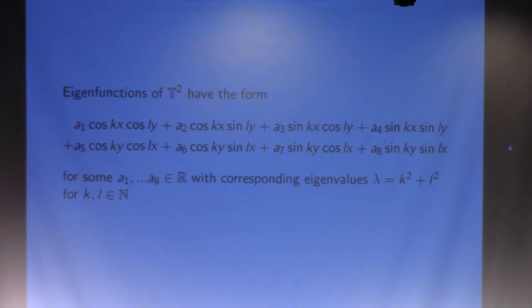Some pretty simple calculations show that any eigenvalue will have the form k squared plus l squared for k and l natural numbers. The eigenspace will have the basis cosine kx cosine ly, sine kx sine ly, and then switching x and y and pairwise products of those. So generally, you have these eight different eigenfunctions.